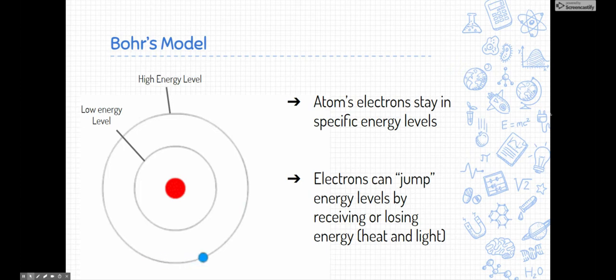So Bohr made his own model and here it is. He suggested that atoms, electrons have to stay in specific energy levels, kind of like you see in this model over here, that there's low energy levels closest to the nucleus and the farther you get away, the higher the energy levels.